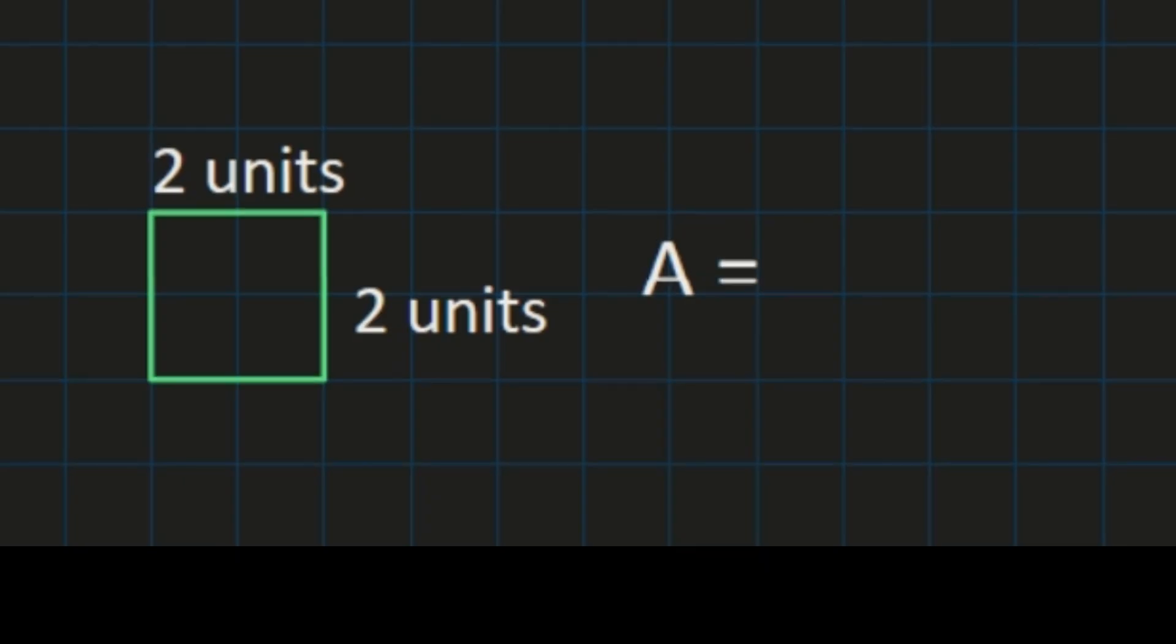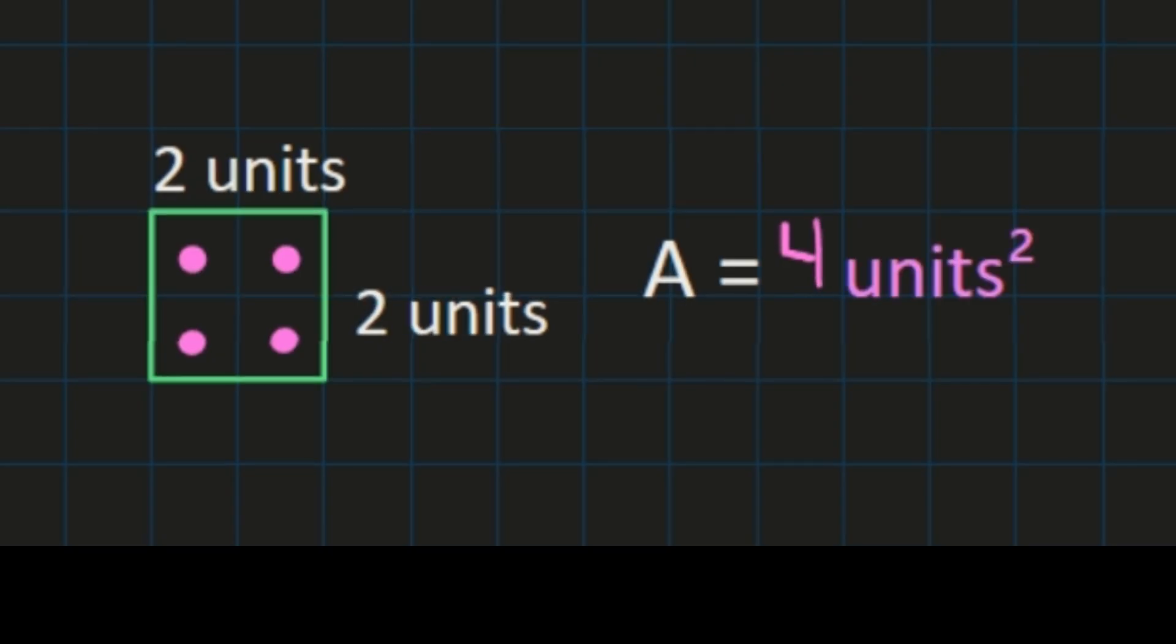So if we are counting the square units we have one, two, three, and four. So we have four units squared inside this square. That is one option you have besides just using the formulas to solve for the area.